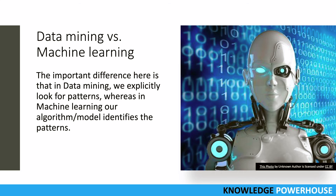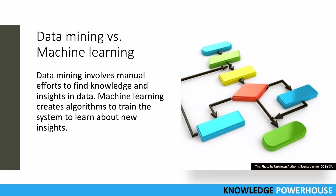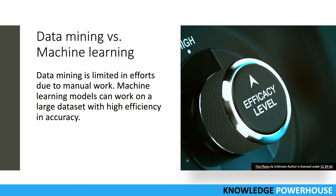Another difference is that data mining involves manual effort — people specialized in data mining put in all the manual work to extract knowledge and insights from data. Whereas in machine learning there are specialized algorithms by which you train the model, and then the model starts learning new insights on its own. Manual effort is much less in machine learning compared to data mining.